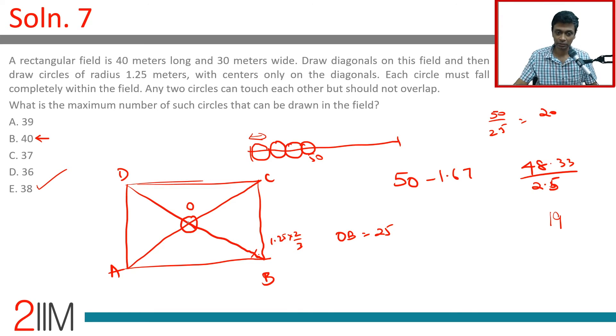So, OB is 25, half of BD. From OB, right at this end, we lose 1.25 into 2 by 3. At this end, we lose 1.25. So, out of 25, we lose 1.25 and we lose 1.25 into 2 by 3. So, we will still get more than 22.5. Right? 1.25 plus 1.25 is 2.5. 25 minus 2.5 is 22.5. We will still get more than 22.5, so here we can squeeze 9 circles. Here we can squeeze 9 circles.